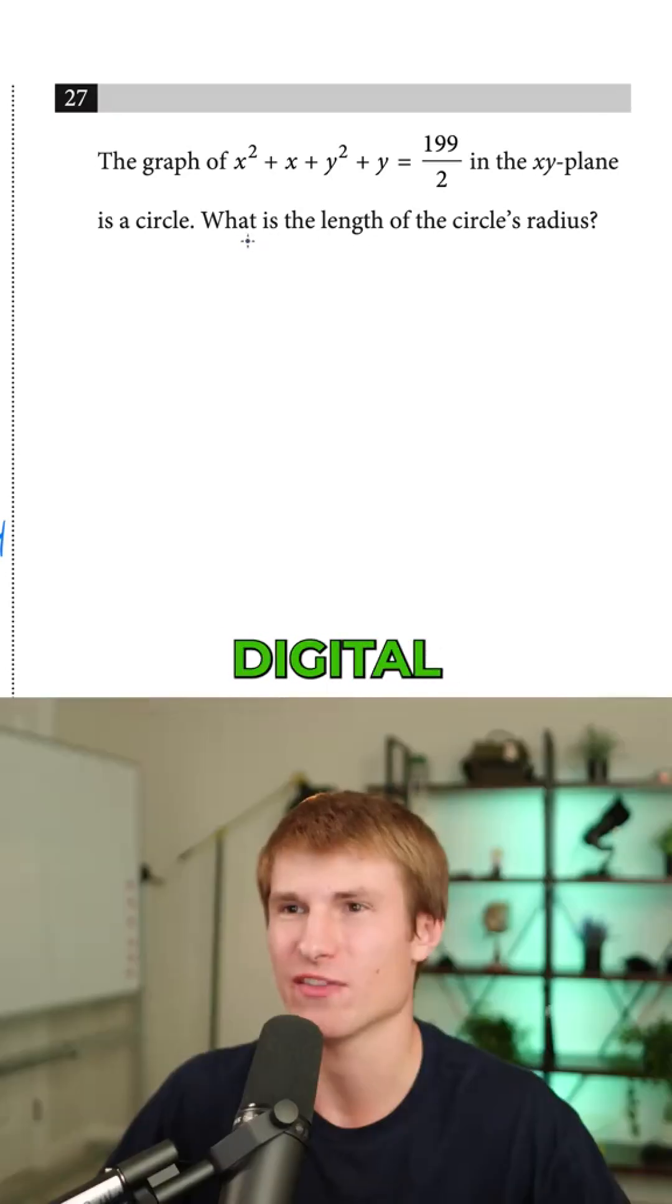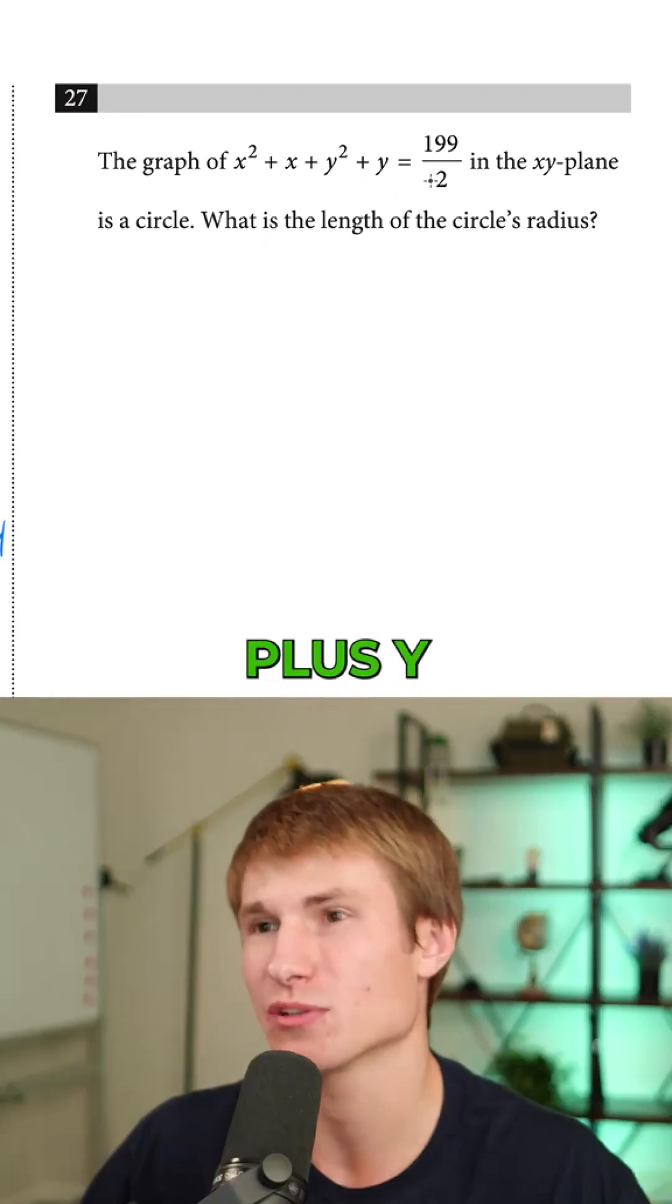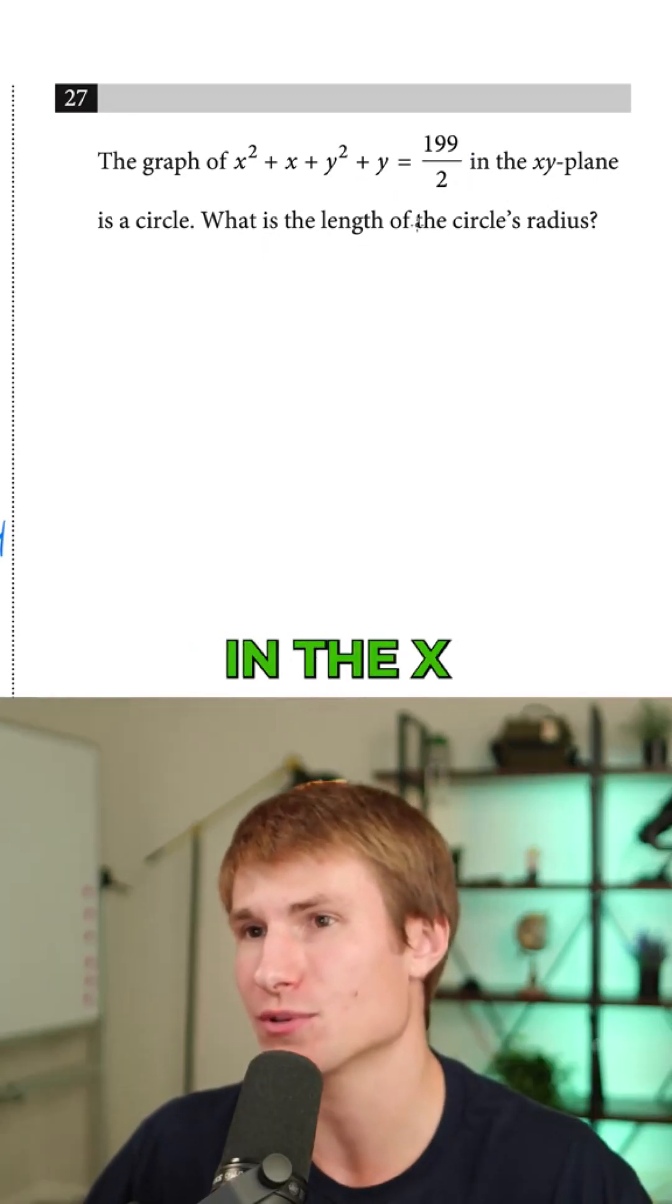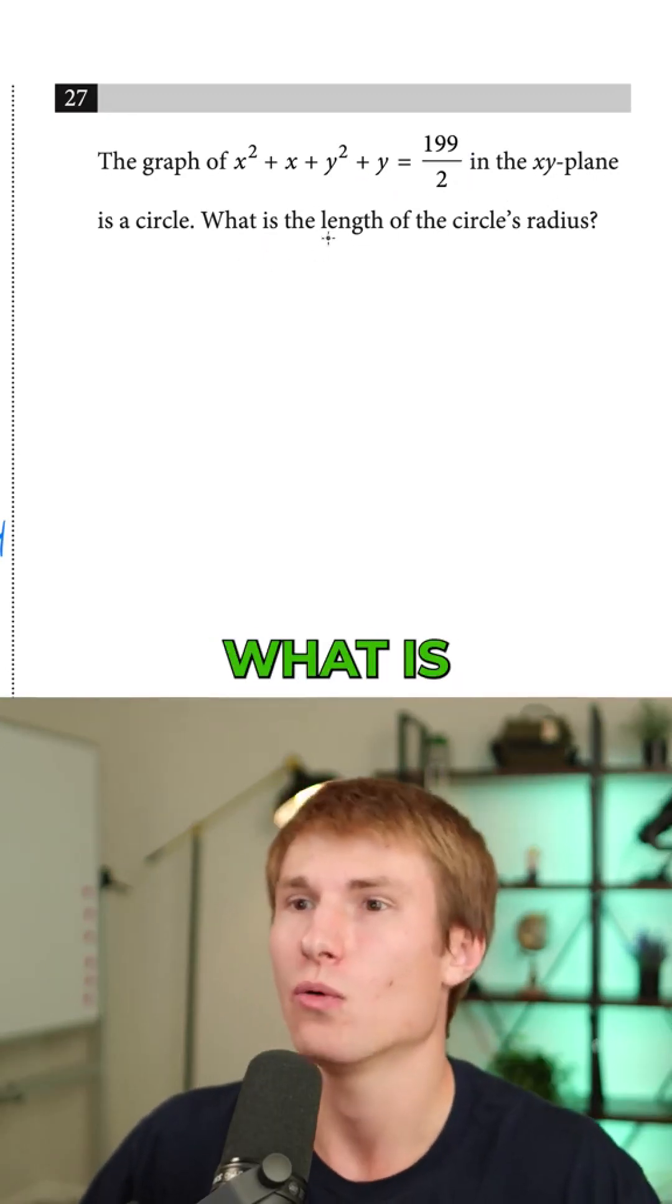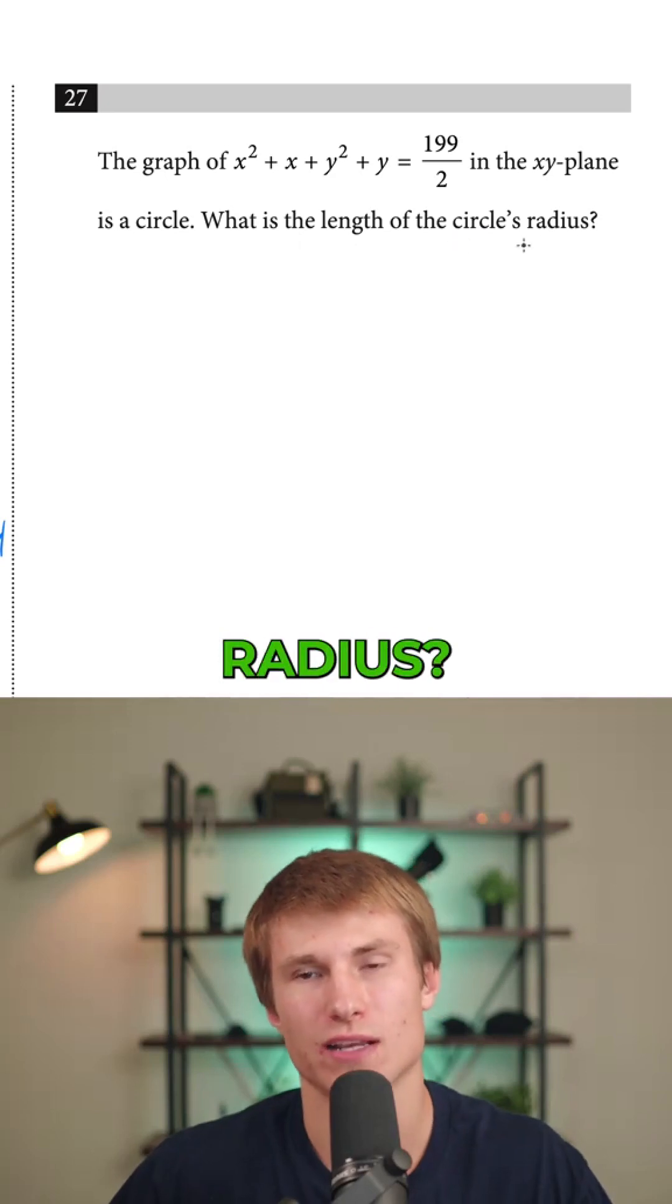Here's how to use Desmos to be more efficient on the digital SAT. Question 27 states that the graph of x² + x + y² + y = 199/2 in the xy-plane is a circle. What is the length of the circle's radius?